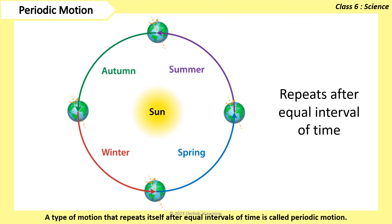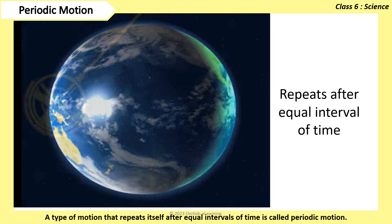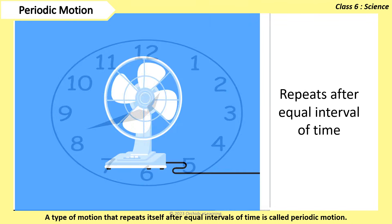A type of motion that repeats itself after equal intervals of time is called periodic motion. Examples: pendulum, the earth's rotation, hands of clock, electric fan, etc.